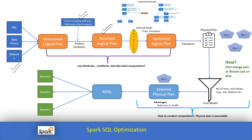Once tables and columns are resolved, the plan passes to the Catalyst optimizer. Catalyst applies internal rules — for example, predicate pushdown, filter pushdown, and attribute filtering — to optimize the resolved logical plan into an optimized logical plan. Keep in mind that the logical plan, from start to finish, is concerned only with the 'what' part: what attributes we need, what conditions to apply, what computations to perform. The 'how' part is not the responsibility of the logical plan.